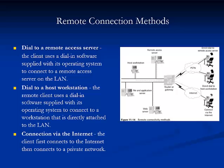Remote network connectivity enables a geographically distant node to network and perform functions as if it were directly attached. Several remote connections exist, including direct dial to a remote access server, in which the client uses dial-in software supplied with its operating system, such as RAS, which comes with Windows 2000 and 2003 Server, to connect to a remote access server on the LAN. Another method is direct dial to a host workstation, in which the remote client uses dial-in software to connect to a workstation directly attached to the LAN.